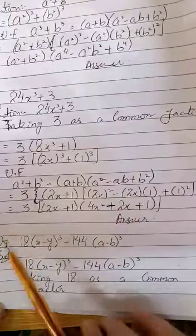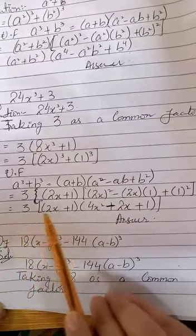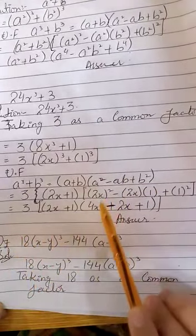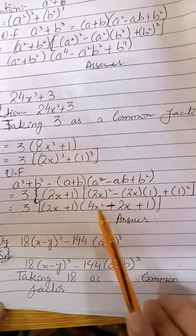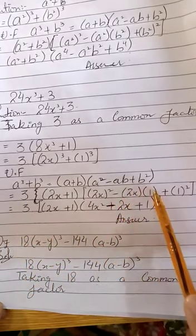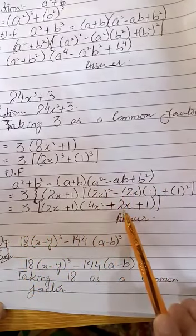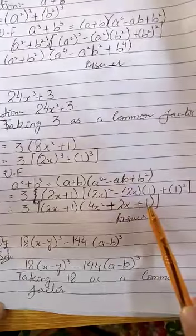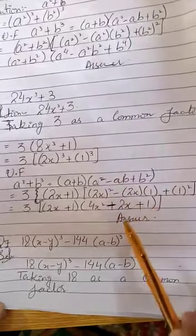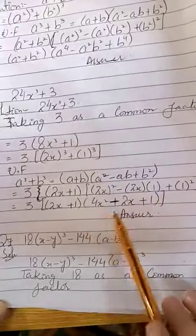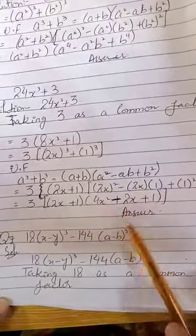Solving these powers: 3 as it is, 2x plus 1 as it is, we have 4x square minus 2 ones are 2, which gives 2x, and plus 1. So which is our final answer. Hope you all are clear about it.